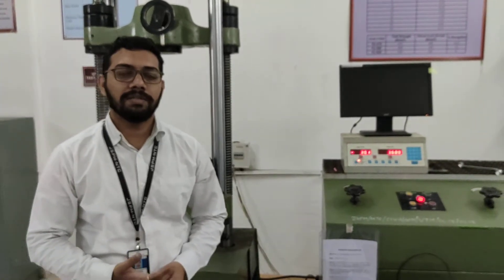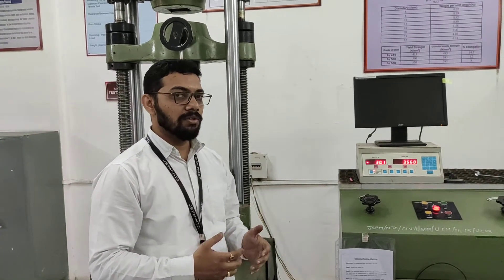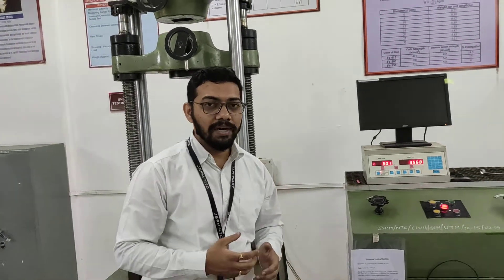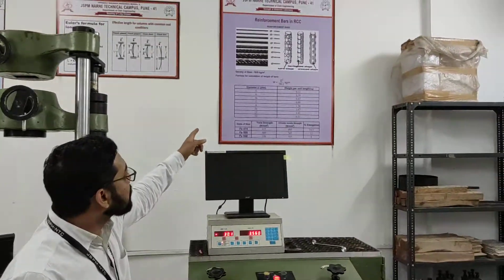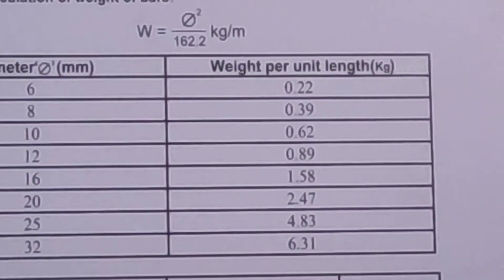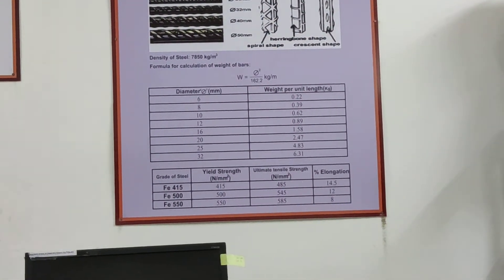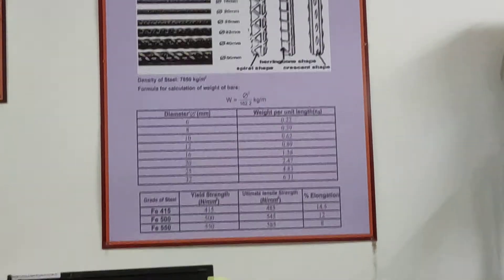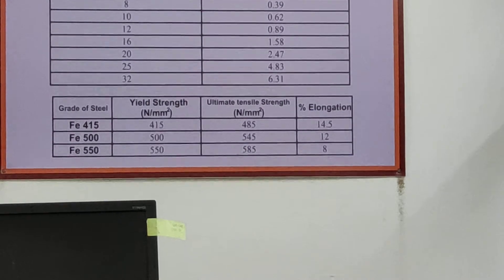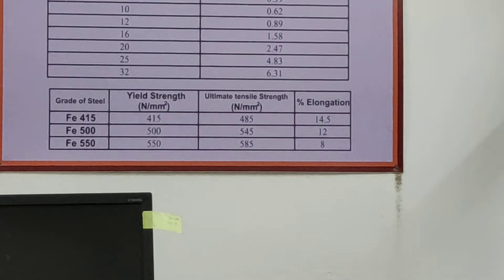This is all about the tension test on mild steel bar. The application of this practical is that when constructing any type of structure, we need reinforcement bars used in RCC. There are different diameter bars — 6 mm, 8 mm, up to 32 mm. For this practical we use Fe 415 grade steel, whose yield strength is 415 N/mm², ultimate tensile strength is 485 N/mm², and percentage elongation is 14.5%.